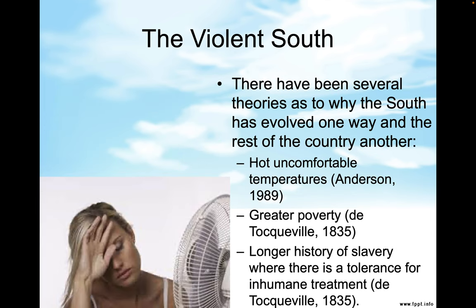So why the South and not other places in the United States? One reason is hot, uncomfortable temperatures. You might say you're in 110–112 degree heat all the time, but your heat is dry — their heat is humid. The humidity level in the South is very high, making it more uncomfortable. Dry heat pulls moisture away from you; humid heat won't allow your sweat to evaporate. Anderson in 1989 came up with that explanation. Another reason is greater poverty in the South than anywhere else in the United States, along with a higher population of African Americans.